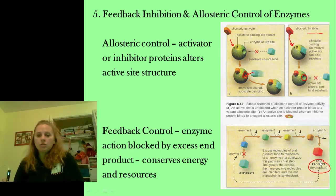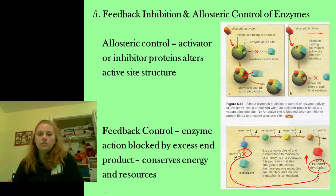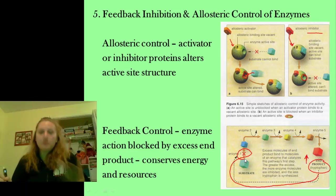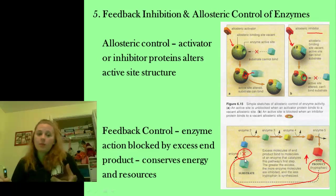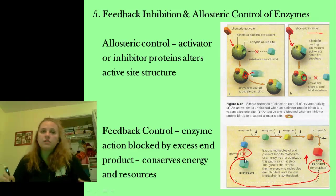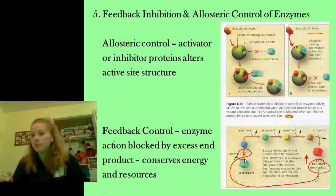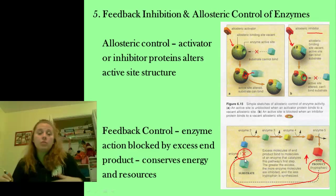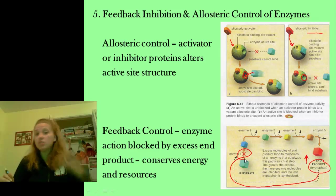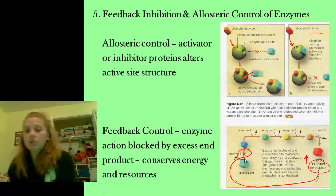Once you make a large amount of the end product, it will actually go back to shut down that particular metabolic pathway. Tryptophan — when you get it in really high amounts, it will actually come back to the first enzyme in the pathway and shut it down so it can't work anymore. This allows us to prevent overproduction, conserves energy, and helps hold on to resources because maybe you just don't need to make so much of it. Tryptophan is an amino acid, by the way.